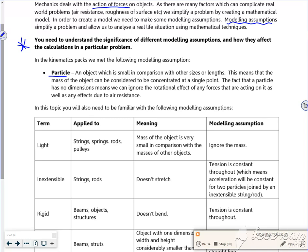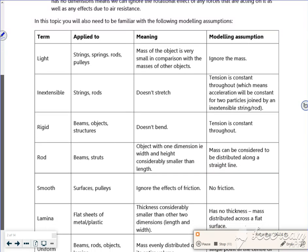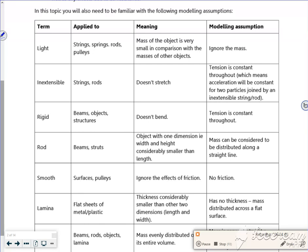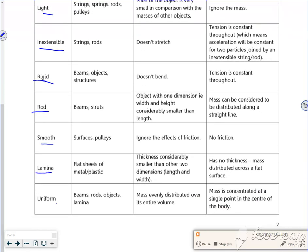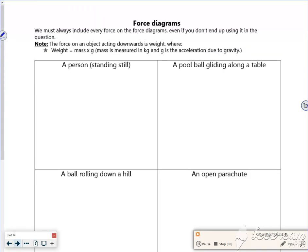So it says here from kinematics that we got the idea of a particle, so we kind of treat everything as single particles. Now there's a list of assumptions: if it's light, if it's inextensible, if it's rigid, if it's rough, if it's smooth, if it's a lamina, if it's uniform. So have a read through them at your leisure.